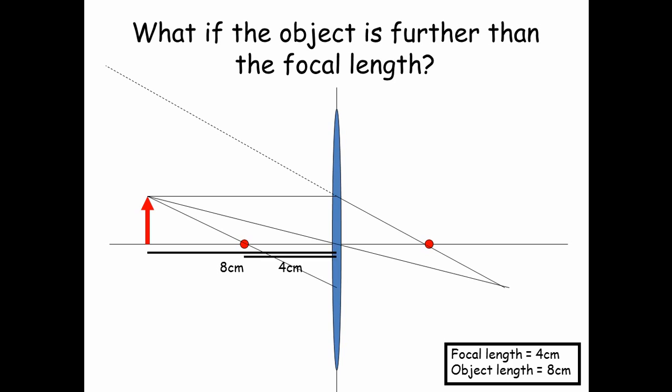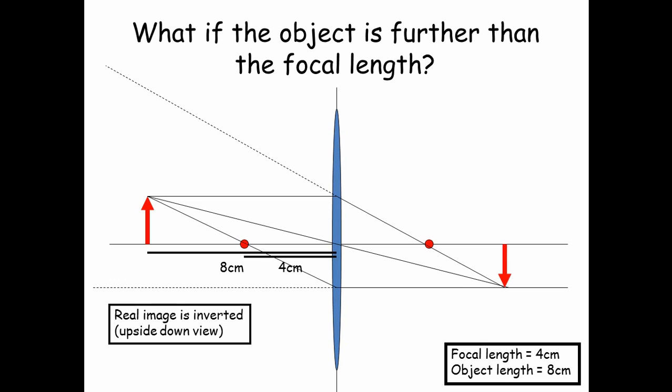And even if we had a point that went through the focal point on the left hand side that would end up going parallel and again all meeting at one single point on the other side. And this is called the image, and it's a real image but it's inverted, it's upside down.